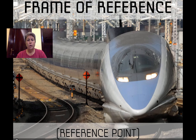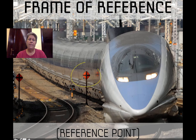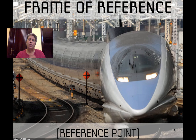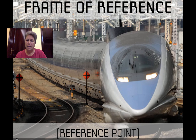If we choose a frame of reference or a reference point — for example, a little orange sign right in the middle — and the train's position is actually changing in reference to that orange sign, then it is moving.